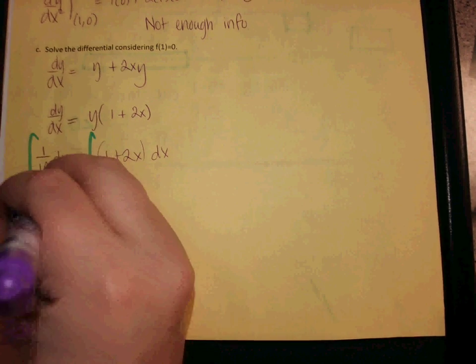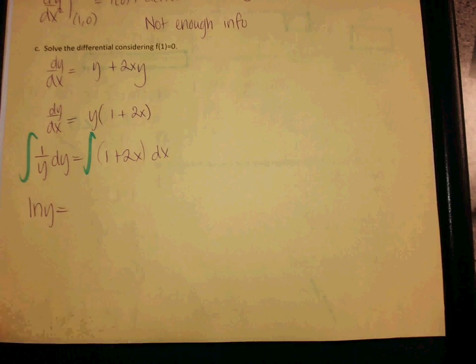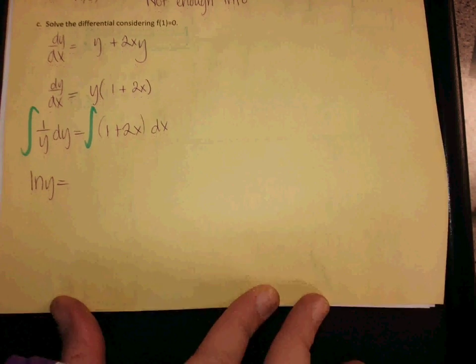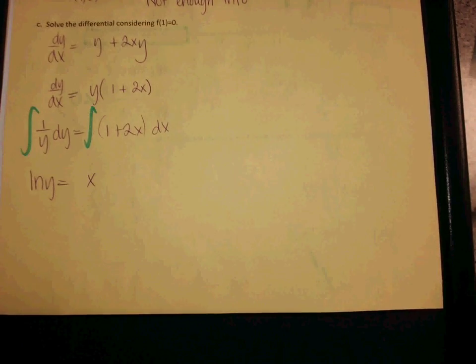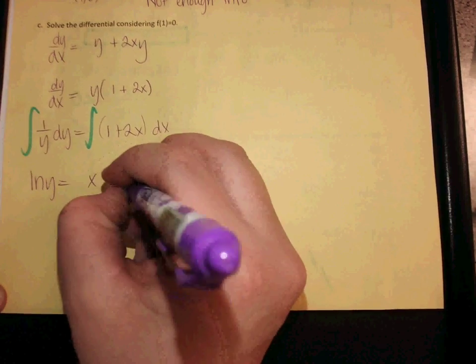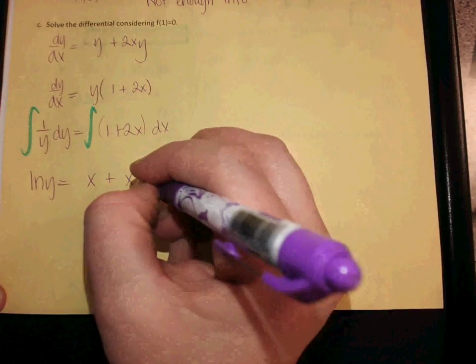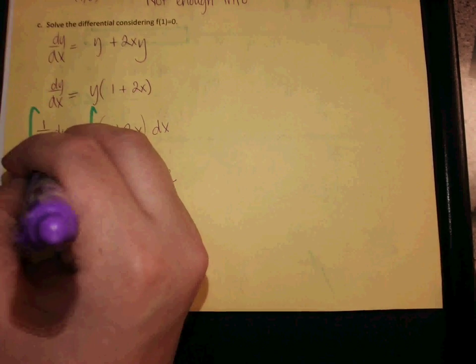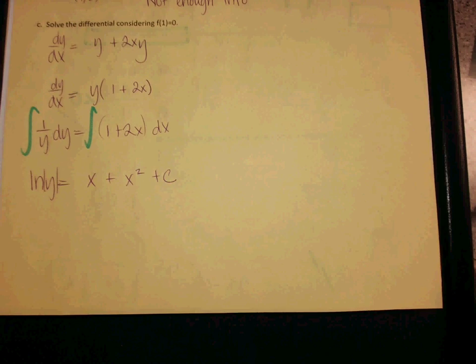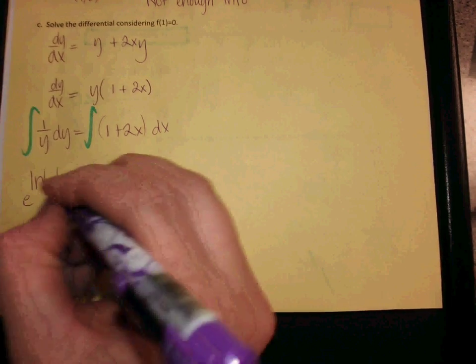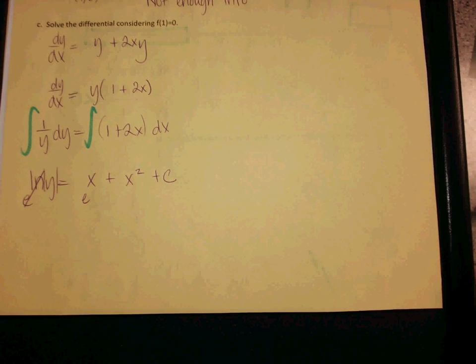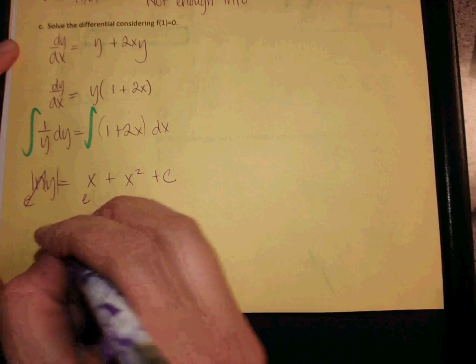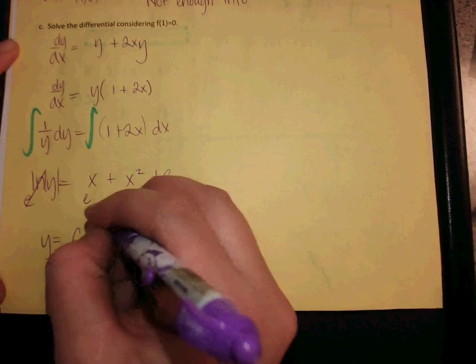What is the integral of 1 over y? ln y. Very good. On the other side, what's the integral of 1? x. What is the integral of 2x? x squared plus C. What do I do next? No, no, you need the absolute value sign. Okay, I do need the absolute value sign. What am I going to do next to get rid of the ln? e. e both sides. And when I e something with a plus C, where does the plus C move? That's right. So, y equals C e to the (x plus x²).